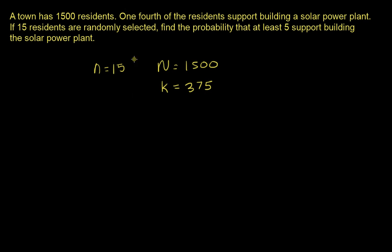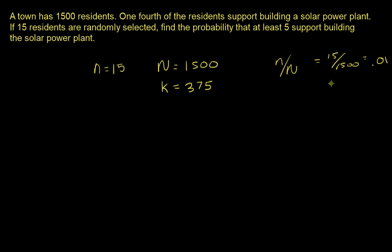This is a hypergeometric distribution because you have sampling without replacement and two outcomes: support building the power plant or not. Notice how small the sample size is compared to the population. If you divide the sample size by the population size and get a number smaller than 0.05, you can use the binomial approximation. Here it's 0.01, which is smaller than 0.05, so we can use the binomial approximation.